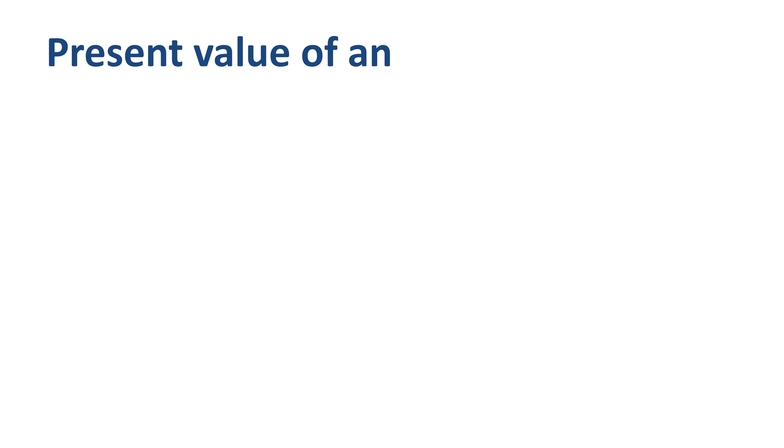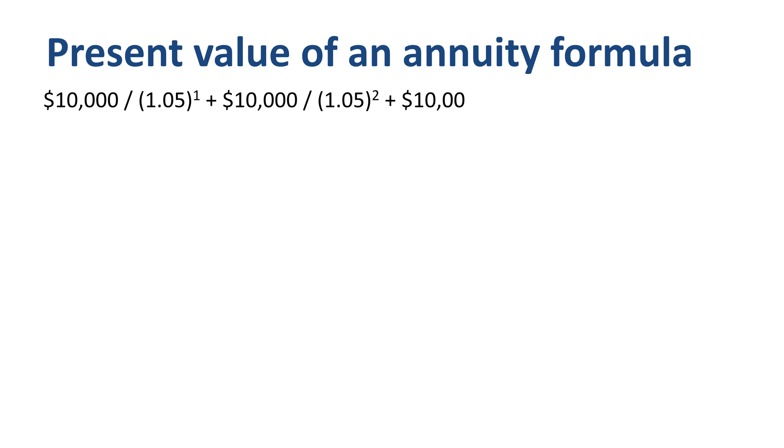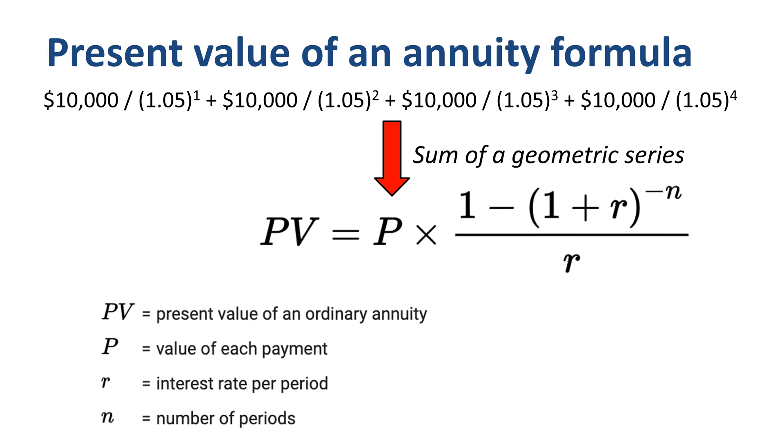The present value of an annuity formula takes the calculations we used previously, where we translated each individual payment to today's equivalent, and applies the mathematical logic of how to get to a sum of a geometric series. The resulting formula consists of PV for present value, P for the recurring payment of the same size, R for the interest rate per period this can be year, month, week, or even day,